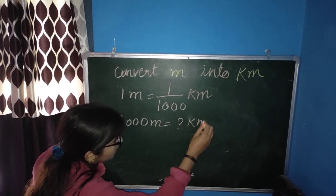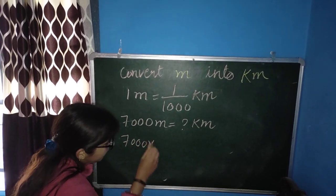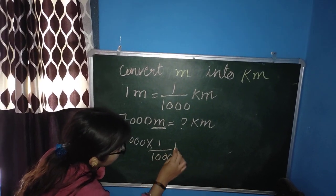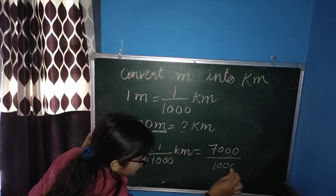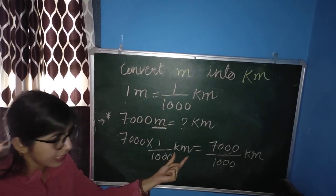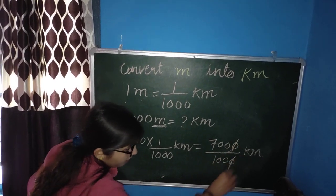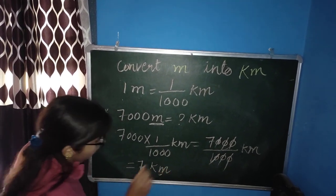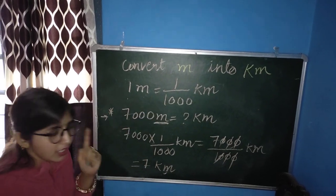We need to find how many kilometers are in 7000 meters. We write 7000 multiplied by the value of 1 meter, which is 1 by 1000 kilometer. So we get 7000 divided by 1000. Cancelling three zeros from both — first, second, and third — we are left with 7. So the answer is 7 kilometers. How many kilometers in 7000 meters? The answer is 7 kilometers.